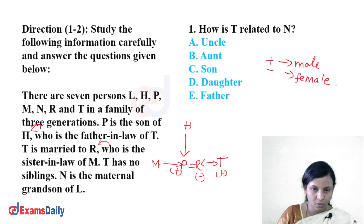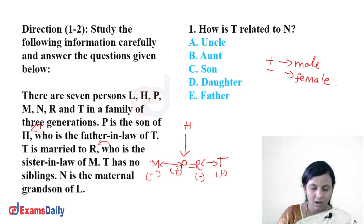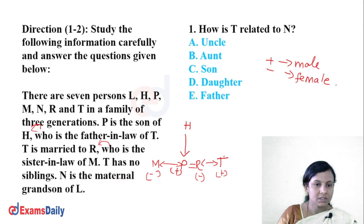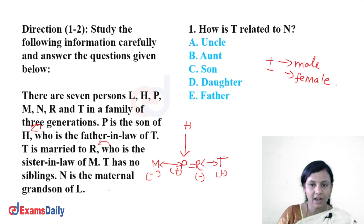So P's brother's wife is M. Therefore R is the sister-in-law of M. T has no sibling, so in-law relations are confirmed through the brother-wife link. T has no sibling.